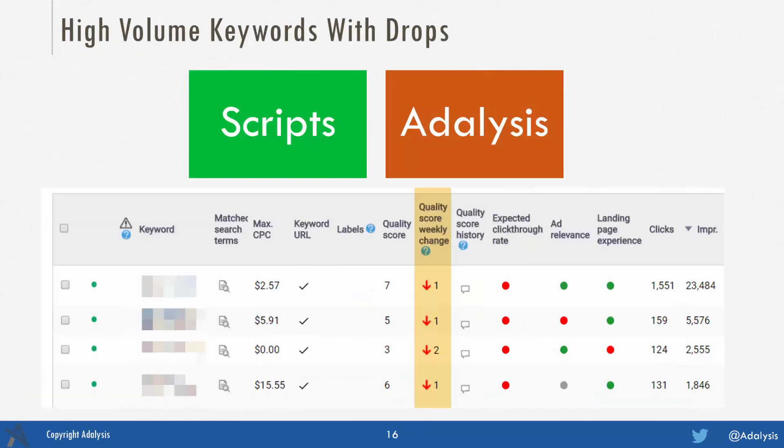Second, look at high volume keywords that dropped in quality score. You can do this in scripts if you want, but remember that scripts often write alerts to another file, so make sure you're checking the file and getting alerts. But don't set too many alerts or you'll start to ignore them all. You can also use a system like Adalysis, which will automatically tell you when you have quality score drops for high impression keywords.